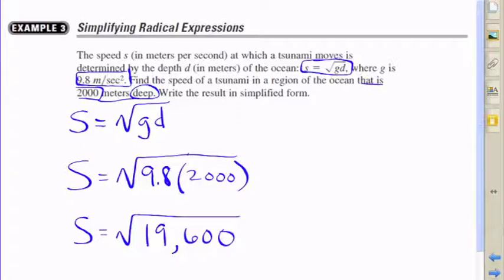and we come up with a result of 19,600. So we'll get the speed of the tsunami if we just find the square root of 19,600.